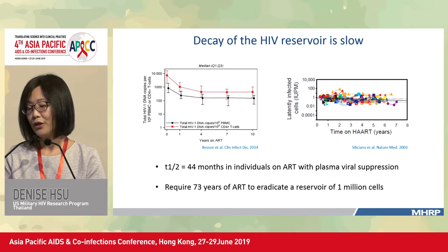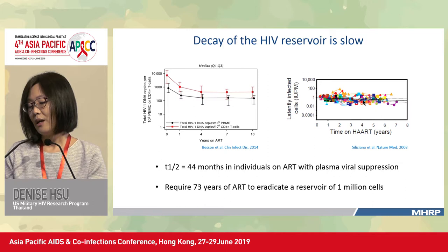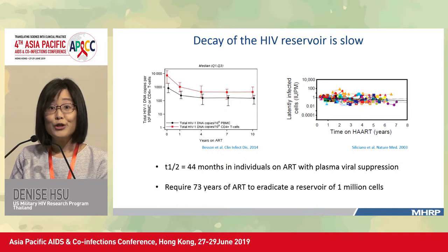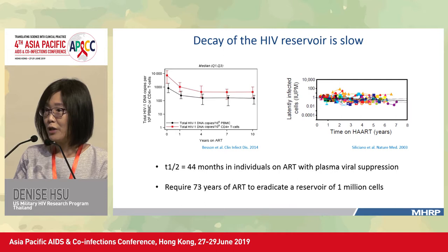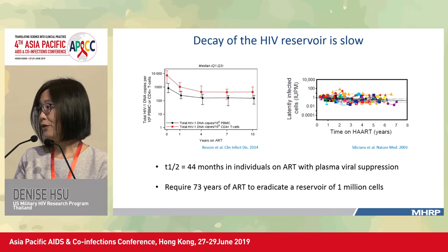Similarly, using the Q4 assay, after ART initiation — especially after the first year — the decay of the reservoir is extremely slow. The half-life of the reservoir is estimated to be 44 months in individuals on ART with plasma virus suppression, meaning that 73 years of ART would be required to eradicate a reservoir of one million cells.